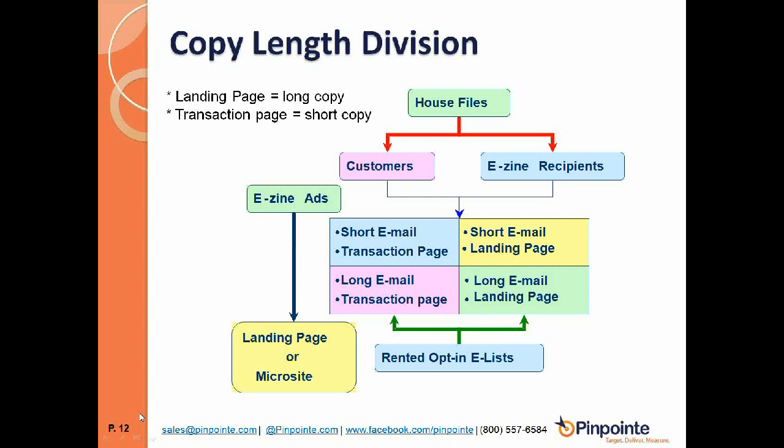Using a four-quadrant framework: if you use a short email and a short transaction page, that works for offers that don't need a lot of copy — for example, giving away a free white paper. It doesn't take much copy to convince someone to take a free white paper. There's no money changing hands, so that combination works well for free offers.